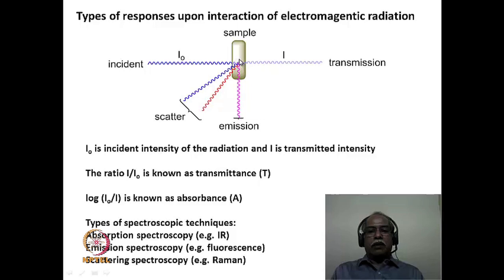Instead of being absorbed or scattered, the molecule can also emit light — this corresponds to emission spectroscopy. We have fluorescence spectroscopy and phosphorescence spectroscopy as emission spectroscopic techniques corresponding to this process.